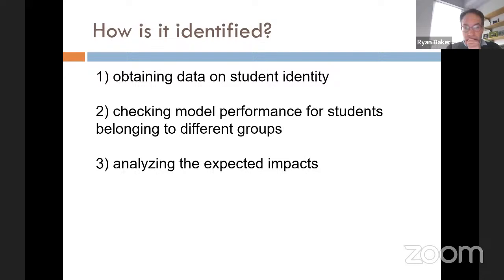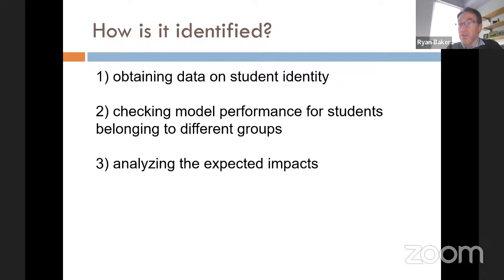How is this identified? It's a three-step process. First, we obtain data on student identity so we can see if students with different identities are being impacted. Then we check model performance for students in different groups. And then we analyze what the expected impacts are going to be on those students.